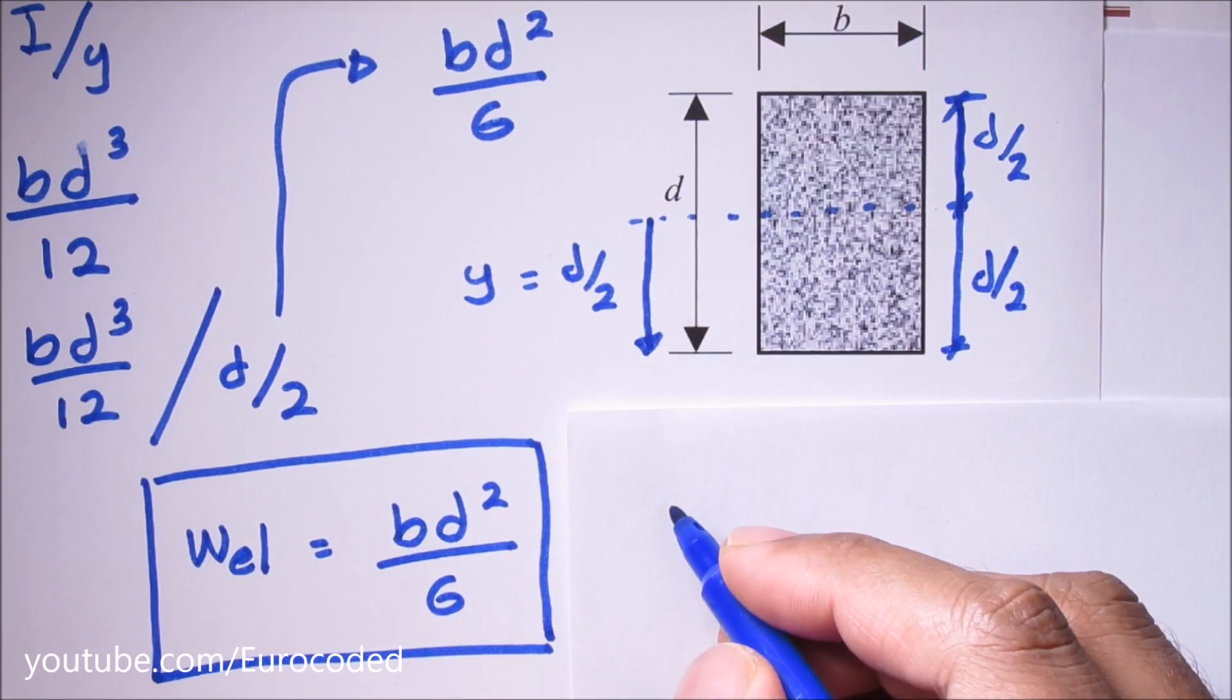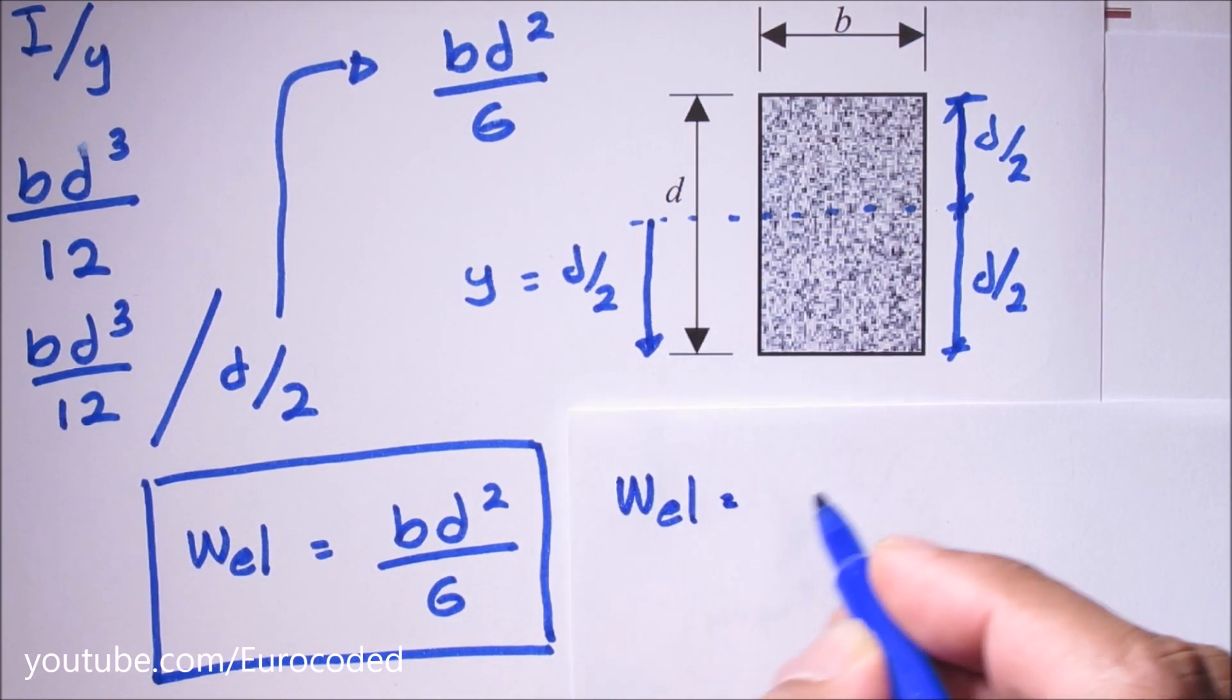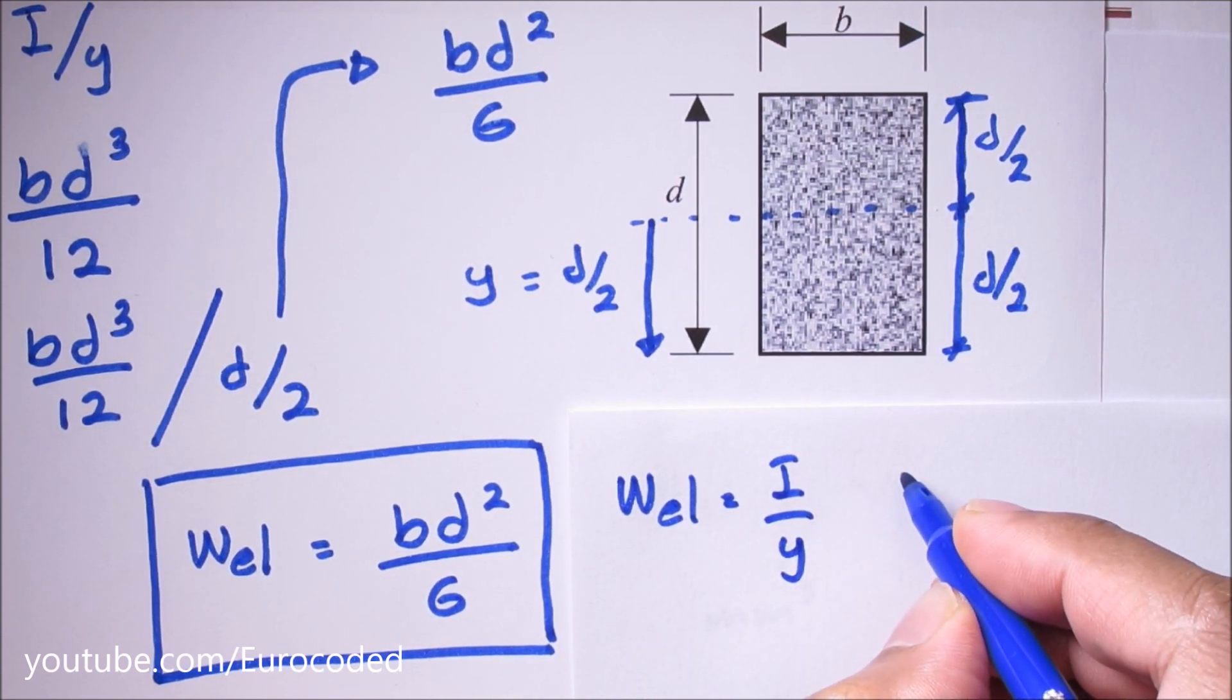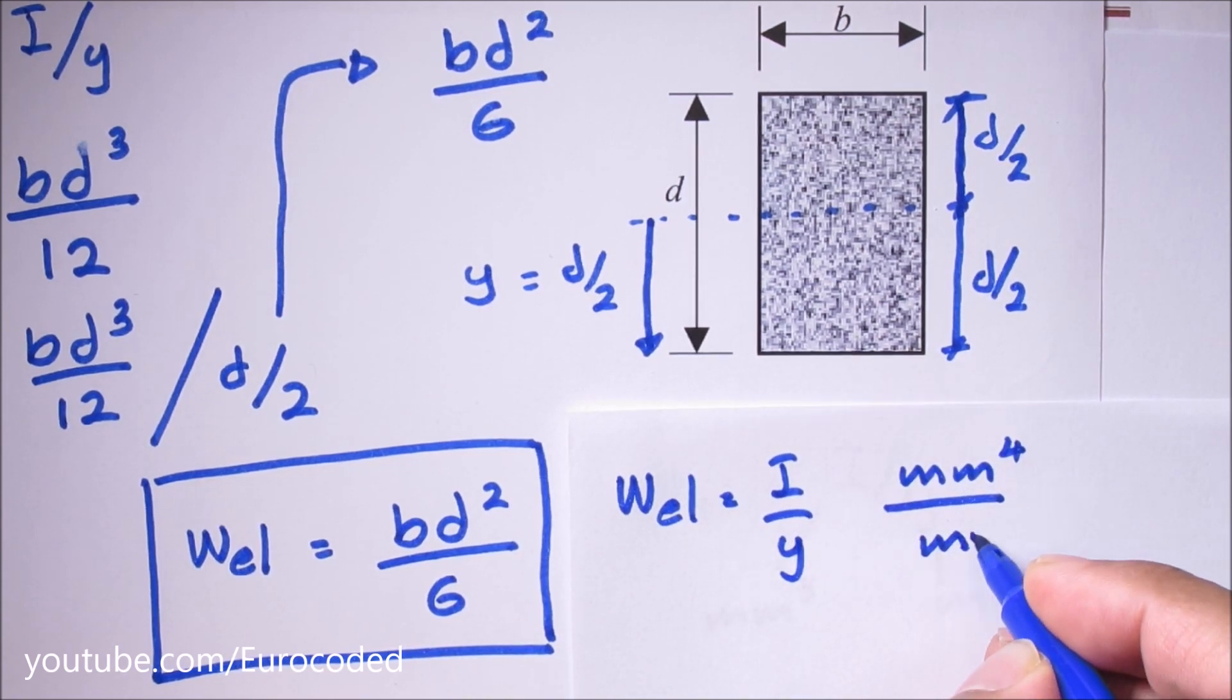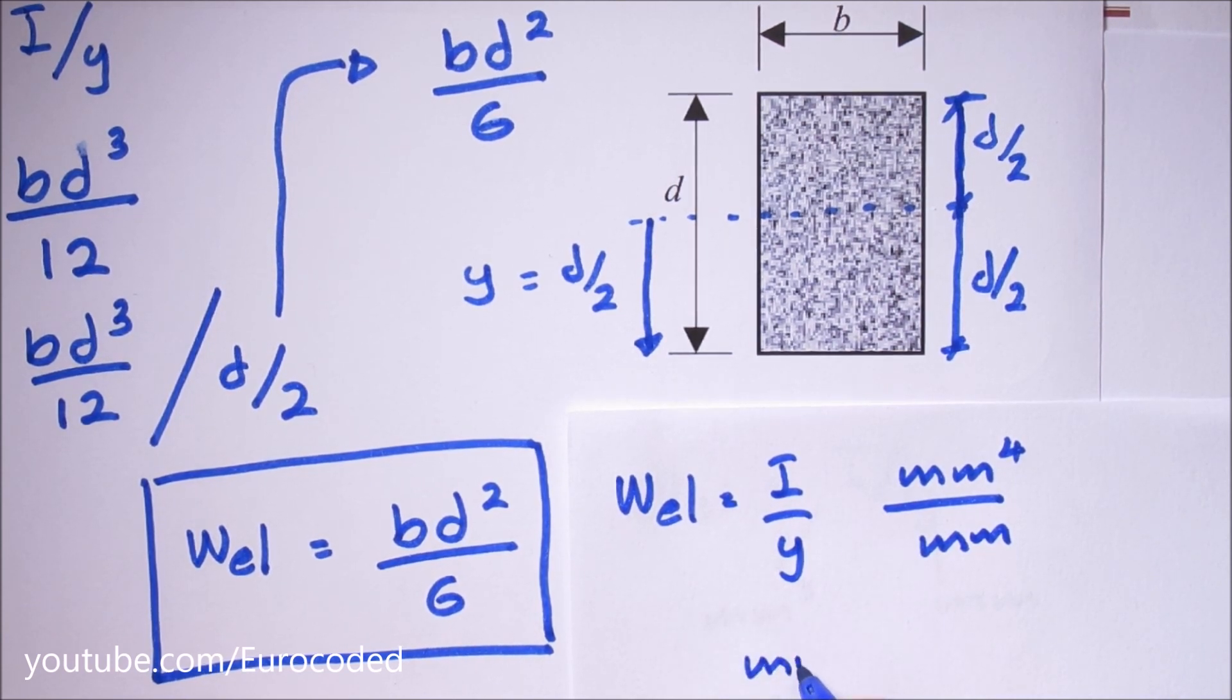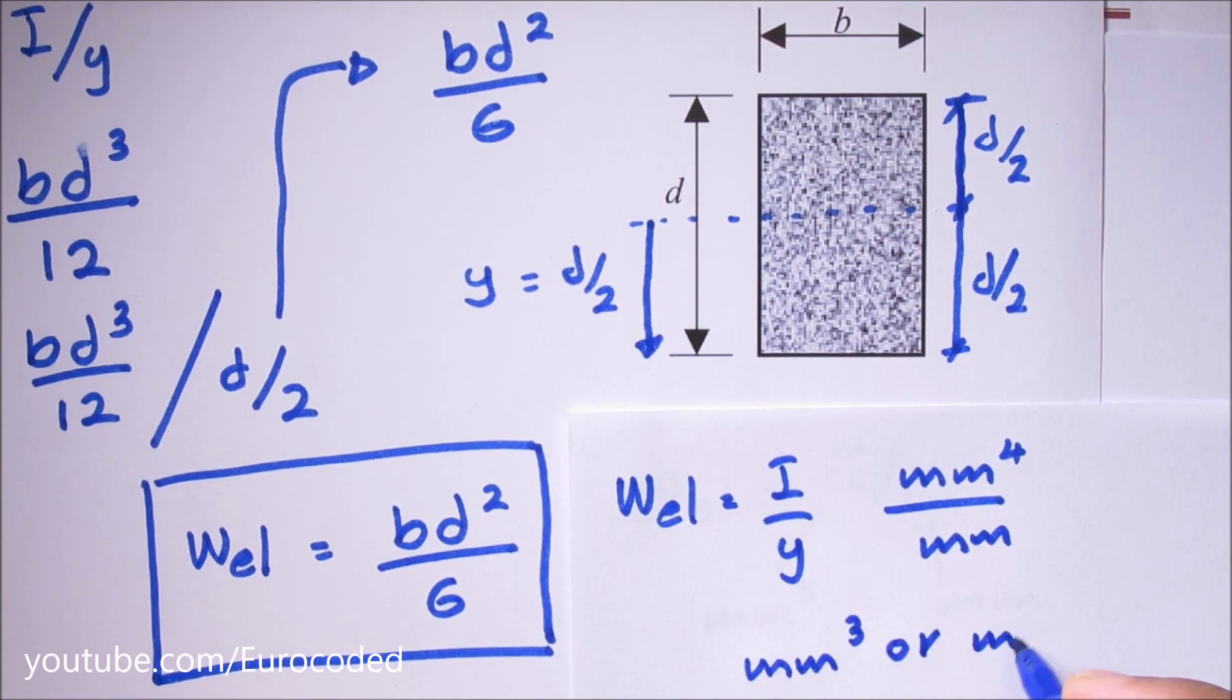Now let's look at the units of section modulus. W_EL is equal to I over Y, and units of I are mm⁴ and units of Y are mm. Therefore units of section modulus is millimeter cubed or meter cubed.